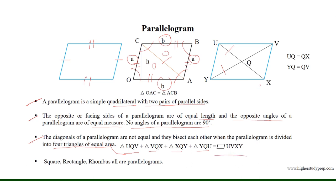As the diagonals UX and YV bisect at Q, UQ is equal to QX, and YQ is equal to QV.